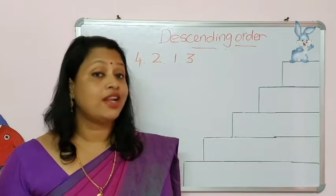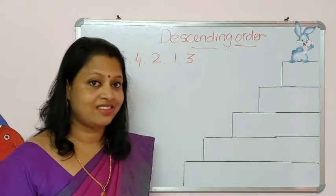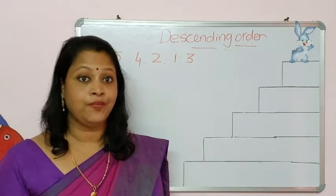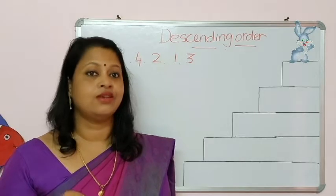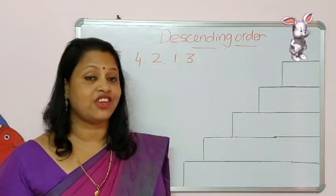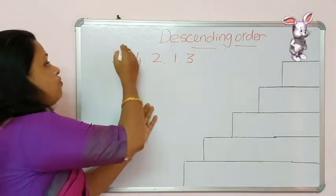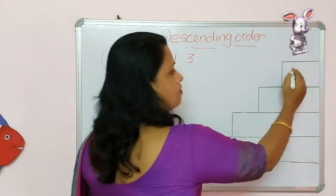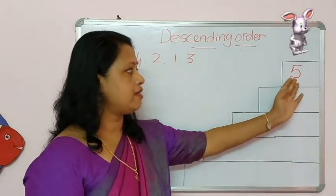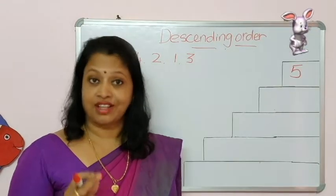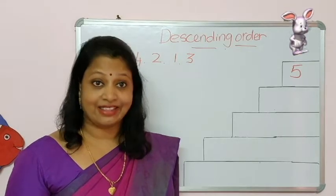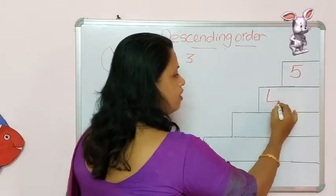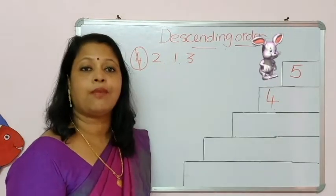So dears, let's help Mr. Bunny to come down. You have to arrange the numbers from big to small. Which is the biggest number here? Right, number 5. So cut this number and write 5 here — bunny is on step number 5. Which is the next number? Right, 4. So cut this 4 and write number 4 here. Now bunny is on step number 4.